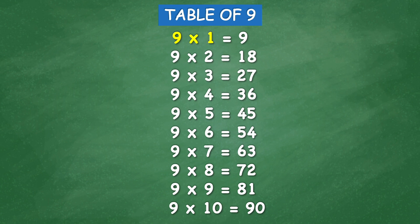Table of 9: 9 times 1 equal 9, 9 times 2 equal 18, 9 times 3 equal 27, 9 times 4 equal 36, 9 times 5 equal 45.